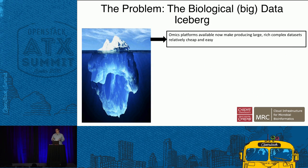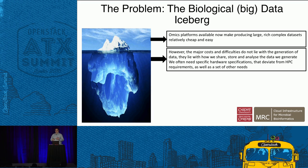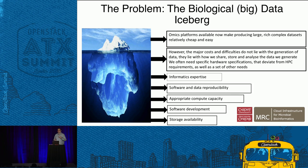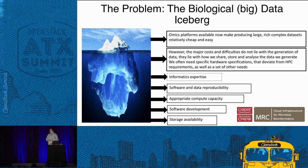This is what I call the sequencing iceberg — really a big data iceberg. We can now generate data very cheaply and rapidly, but our main costs as researchers are in the bit most PIs don't see: informatics expertise, reproducibility of software, ease of sharing data, compute capacity, and storage capacity. All underpinned by expertise.